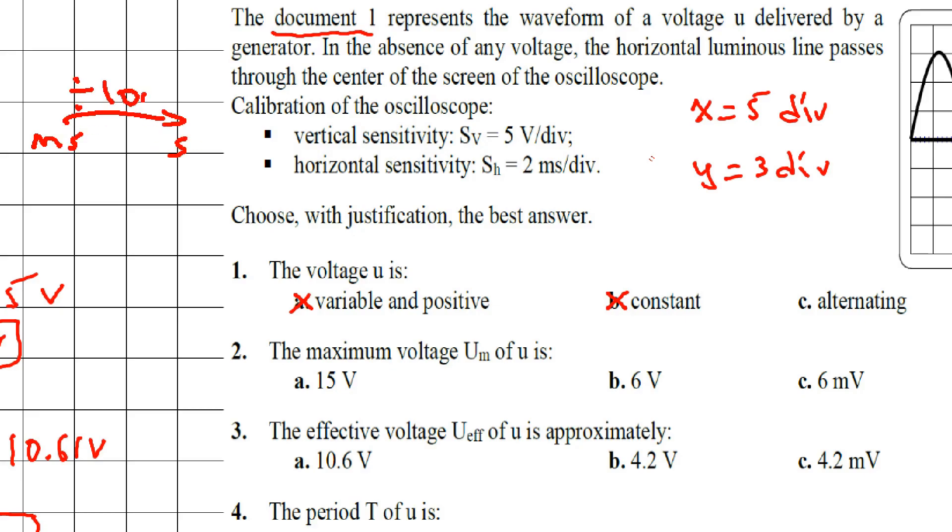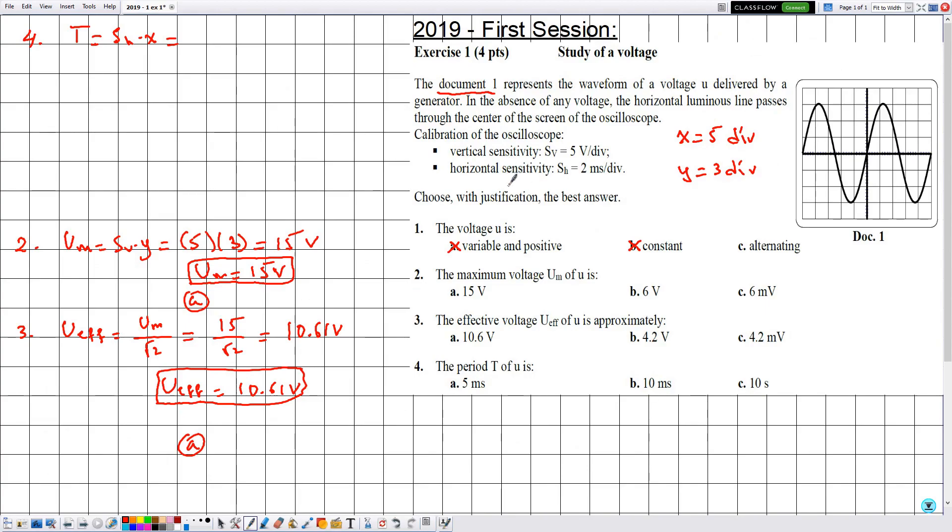Dividing Sh by 1000, then Sh is 0.002 seconds per division. Then 0.002 multiplied by the value of x, which is 5. Plugging this on the calculator gives us 0.01 seconds. The period is 0.01 seconds.